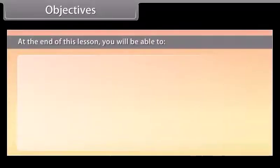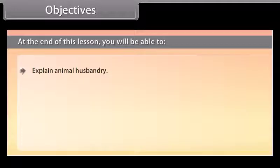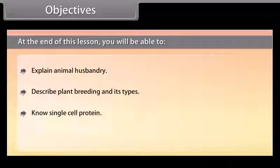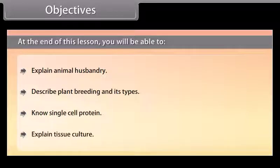Objectives: At the end of this lesson, you will be able to explain animal husbandry, describe plant breeding and its types, understand single cell protein, and explain tissue culture.